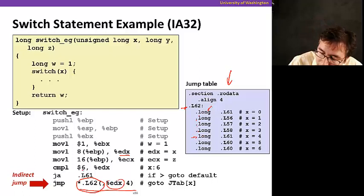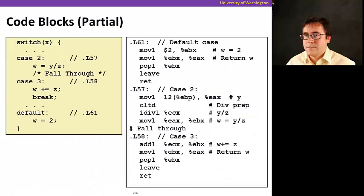So another thing to note here is that we are comparing whether x happens to be greater than 6. And if it is greater than 6, it jumps straight to default.